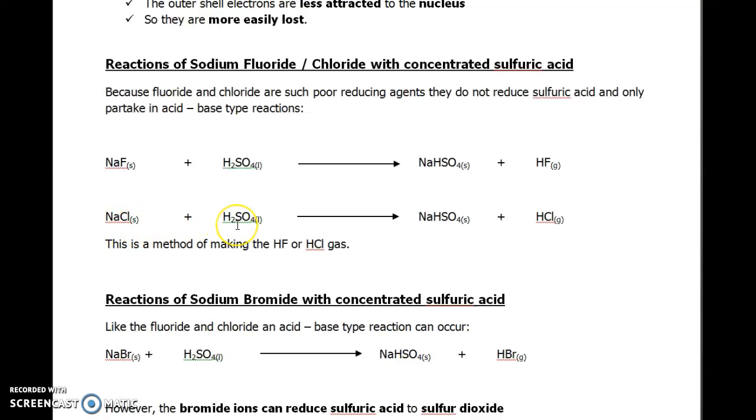Similarly, sodium chloride reacts with sulfuric acid. The chloride acts as a base, accepting a hydrogen ion to form hydrogen chloride gas and sodium hydrogen sulfate. This is actually one way of making HCl gas. You would observe white fumes.